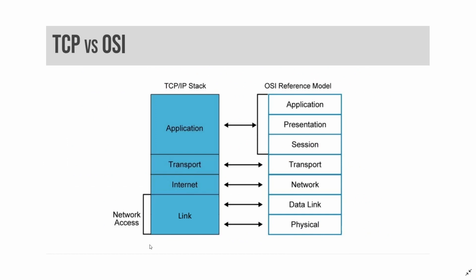The network access layer of the TCP/IP model combines Layer 1 and Layer 2 of the OSI model. It describes Layer 1 issues such as energy, bits, and the medium used to carry them — copper, fiber, wireless, etc. It also describes Layer 2 issues like converting bits into protocol units such as Ethernet frames, MAC addresses, and network interface cards.